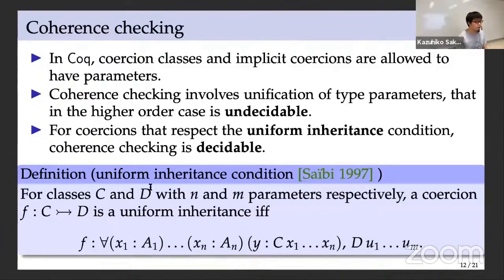The problem with coherence checking is that in Coq, coercion classes and implicit coercions are allowed to have parameters, and coherence checking involves unification of type parameters, which in the higher-order case is undecidable. However, for coercions that respect the uniform inheritance condition, coherence checking is decidable. The uniform inheritance condition forces f, a coercion from C to D, to have its n parameters in exactly the same ordering as arguments of C.